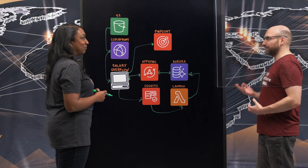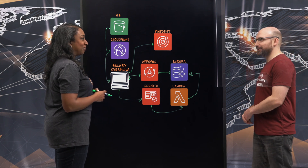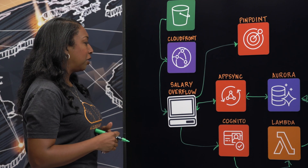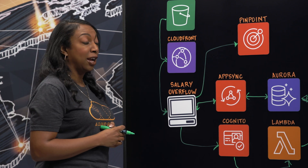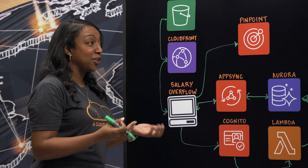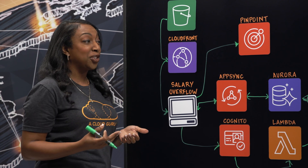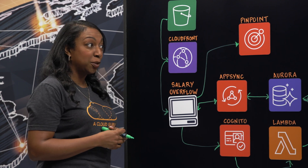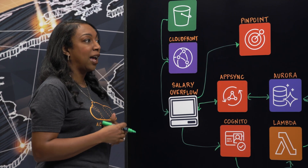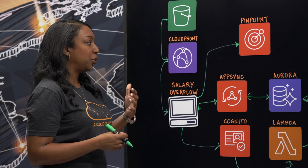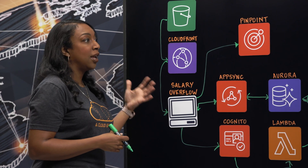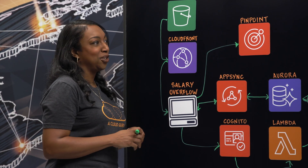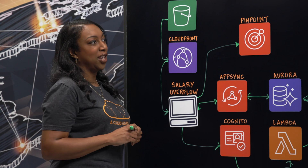Can you tell me about some future plans you have for this architecture? I released Salary Overflow about a month ago, and I have right now close to 2,000 signups. Once I reach 5,000, I'm going to integrate Amazon SageMaker and machine learning models that I will use to make salary predictions and really give people hard data that they can use to help negotiate their salary.